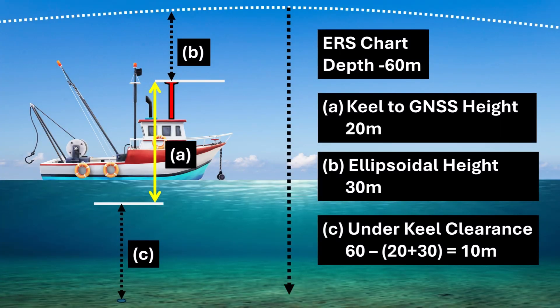Say the chart shows an ERS value of negative 60. If your underkeel to the top of the GNSS antenna is 20 meters and your GNSS antenna is showing negative 30, then your underkeel clearance will be 10 meters. The GNSS antenna to the keel distance remains the same; the only change is the distance between the antenna and the ellipsoid, which will change depending on the tide.